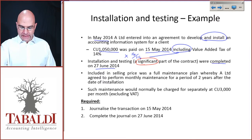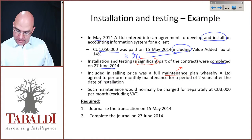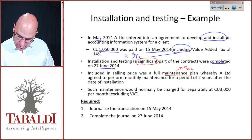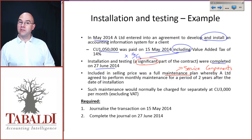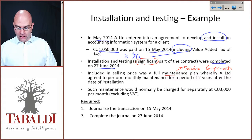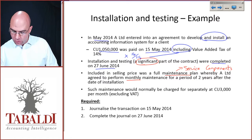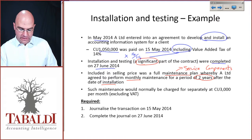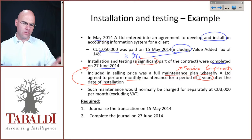Included in the selling price was a full maintenance plan, which has nothing to do with the installation and testing — that is a service component. We're testing whether you remember that different components of revenue need to be recognized separately. A agreed to perform monthly maintenance for a period of two years after the date of installation, i.e., after the 27th of June 2014, so starting from July.